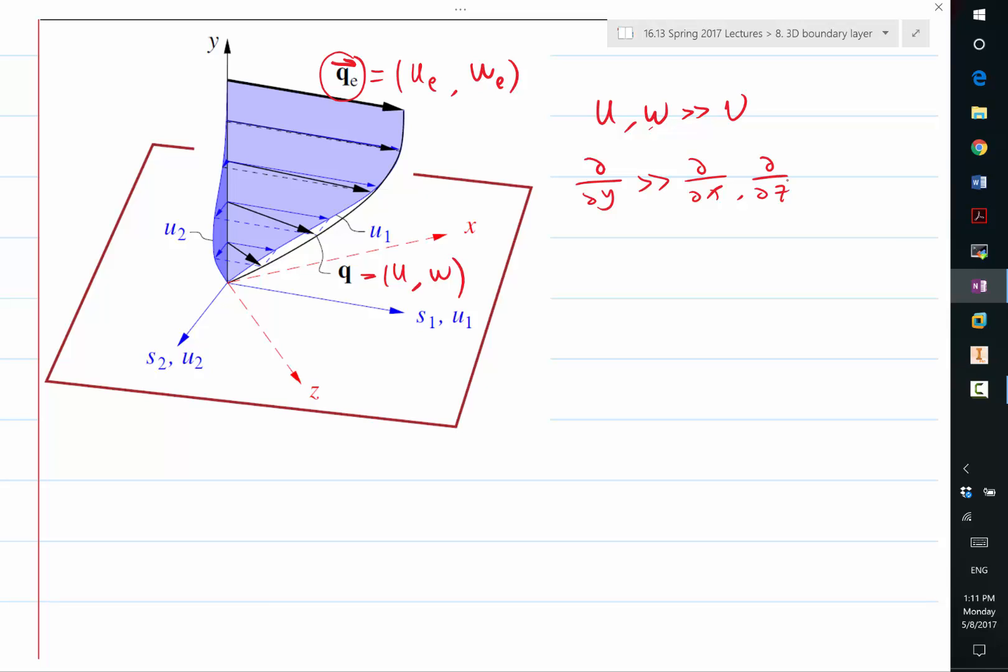That's basically due to the variation orthogonal to the wall being due to viscosity, and the variation in the other directions are due to other effects.